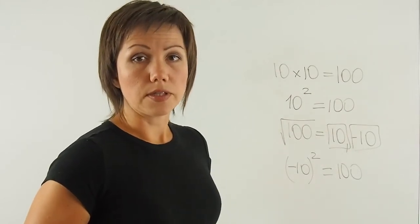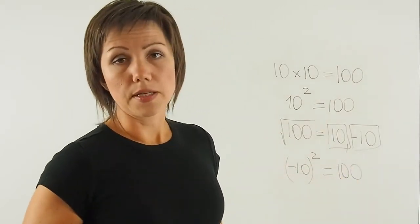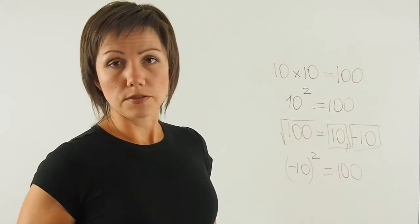So a square root of a number gives us the number that was multiplied by itself in order to get the number under the square root.